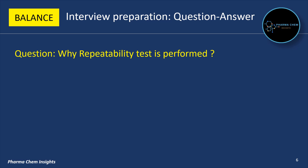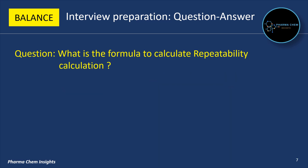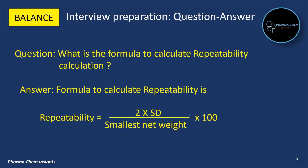Next question: why is the repeatability test performed? A repeatability test is performed to check the ability of the weighing balance to give the same results for the same object under the same conditions every time. The formula to calculate repeatability is: Repeatability = (2 × SD / Smallest Net Weight) × 100, where SD is the standard deviation.